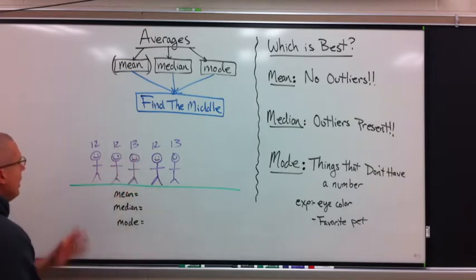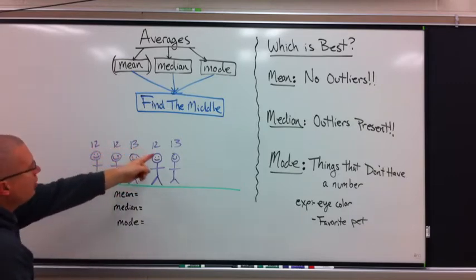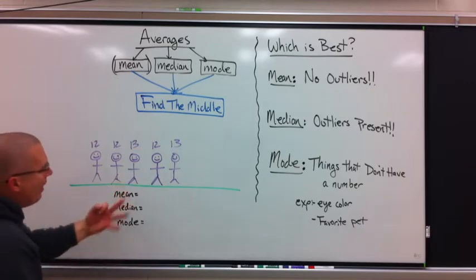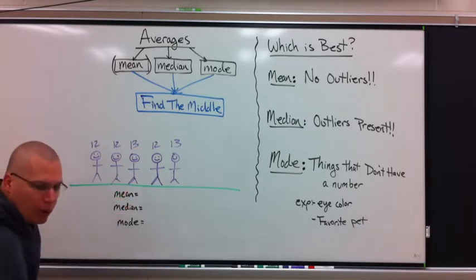Here are five students, ages 12, 12, 13, 12, and 13. What I want to do is find all three averages and we'll talk about what we see.